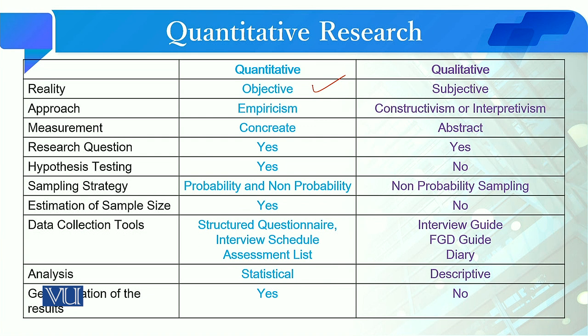In quantitative research we collect data with specified tools and our measurements are concrete, while in qualitative research measurements are abstract. We develop research questions and also develop hypotheses; in qualitative research we develop research questions but do not develop hypotheses. In quantitative research, our sampling strategy can follow both probability and non-probability sampling, subject to the nature of the study and the researcher's choice, while in qualitative research we follow non-probability sampling.